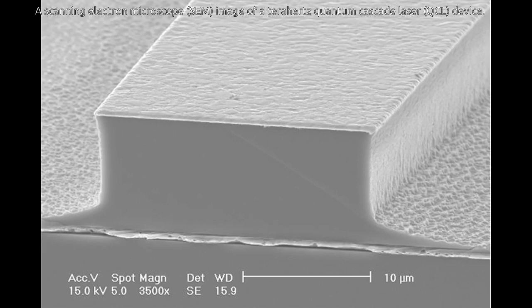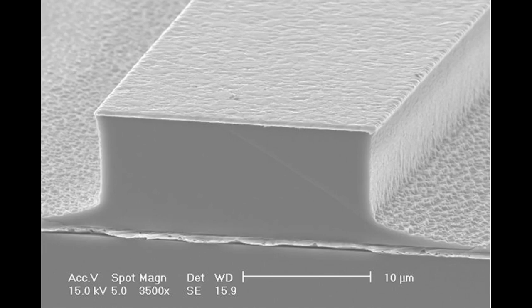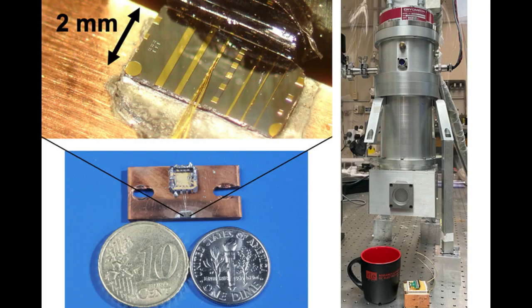Terahertz quantum cascade lasers, tiny chip-embedded semiconductor laser devices, were first invented in 2002. But adapting them to operate far above 200 Kelvin proved so difficult that many people in the field speculated there was a fundamental physical reason preventing it. With a high operating temperature, the researchers can finally put this in a compact portable system and take this breakthrough technology out of the laboratory.